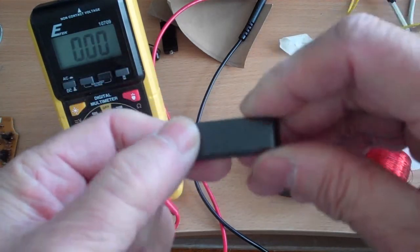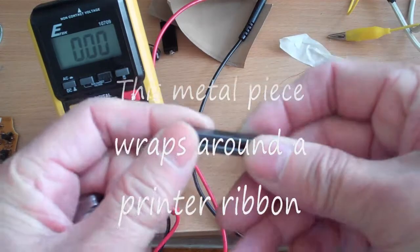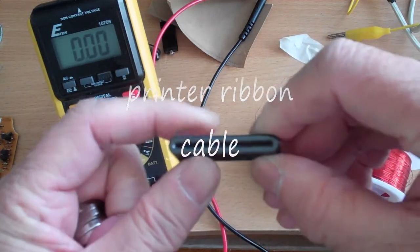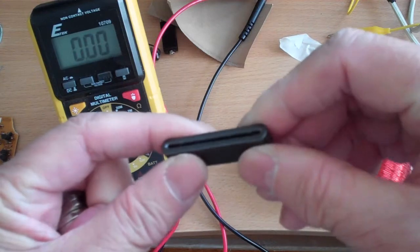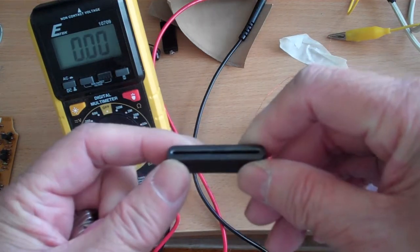This is a ferrite coil that I took out from my Epson printer. Basically it wrapped around the printer cable and I think it was just to minimize the interference.